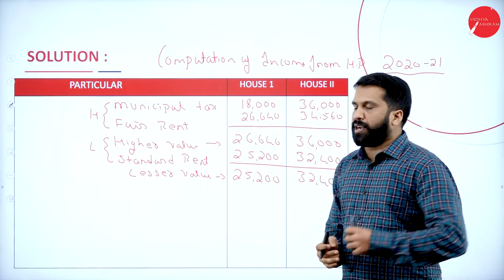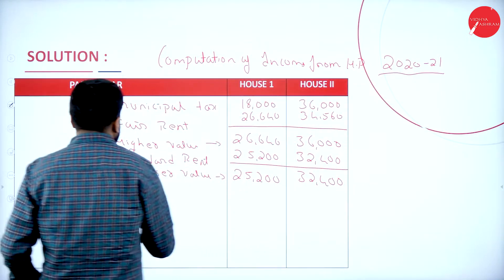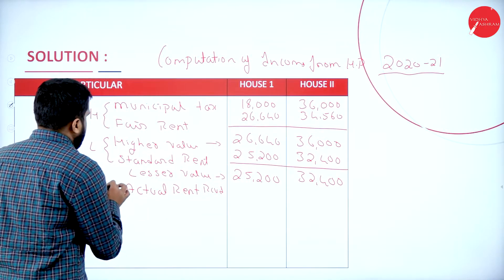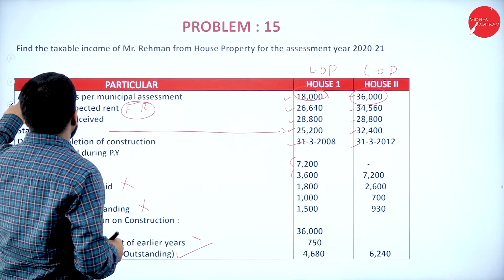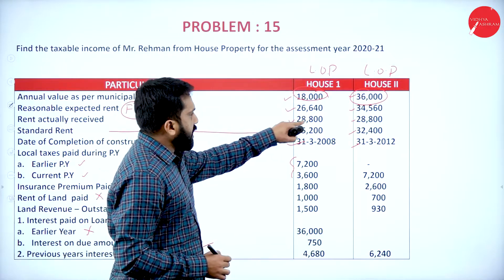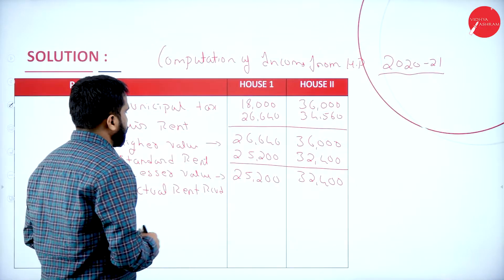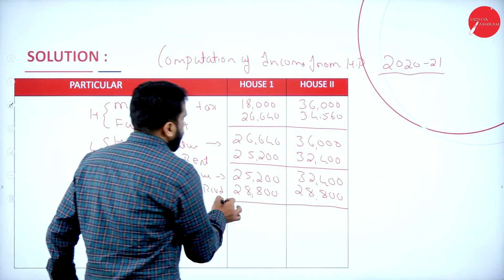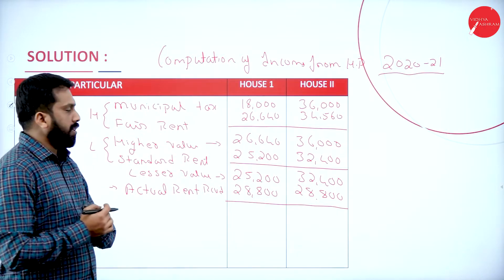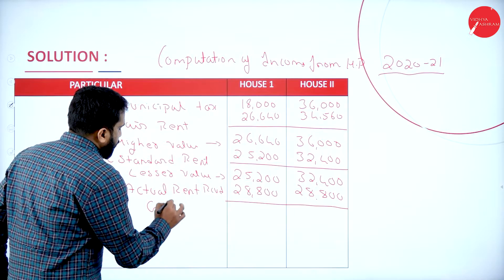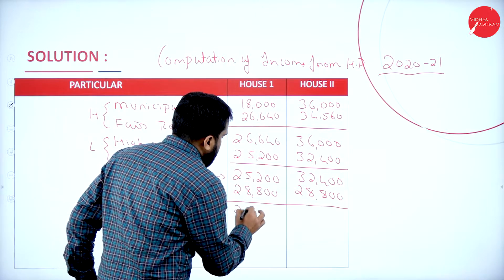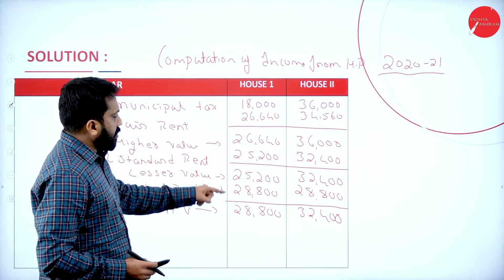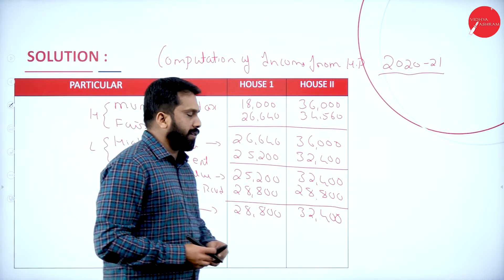The next step is actual rent received. Actual rent received is 28,800 for both houses. Now compare with the standard rent figures: for house 1, compare 28,800 and 25,200 — whichever is higher, that is the Gross Annual Value. 28,800 is higher for house 1, and 32,400 is higher for house 2. So the Gross Annual Value is 28,800 and 32,400.